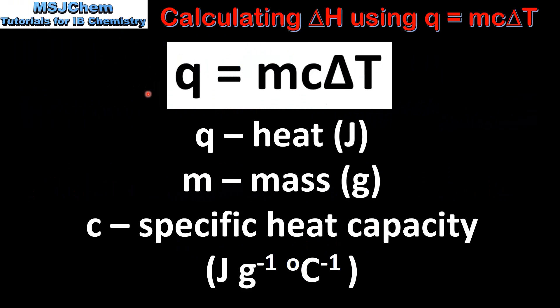We will be using the equation Q equals MC delta T, where Q is heat in joules, M is mass in grams, and C is the specific heat capacity.